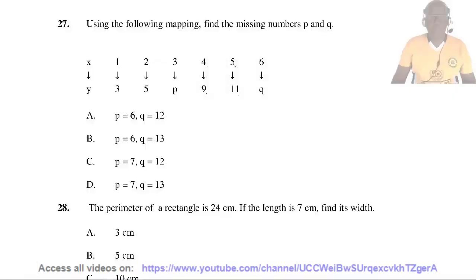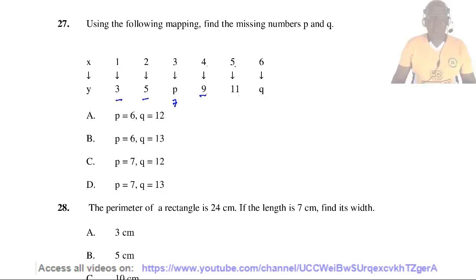Also notice the pattern: the output increases by 2 each time — 3, 5, 7, 9, 11, 13. So P equals 7 and Q equals 13, confirming the answer is D.